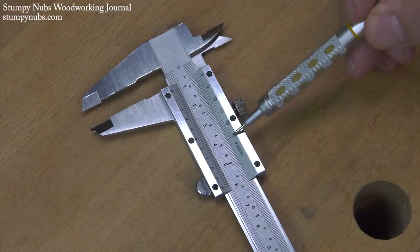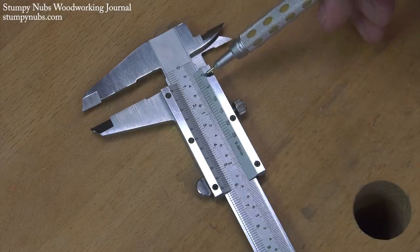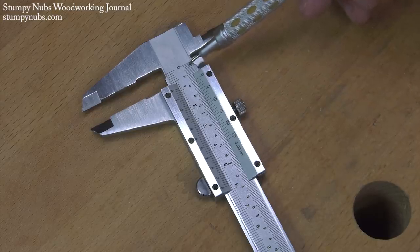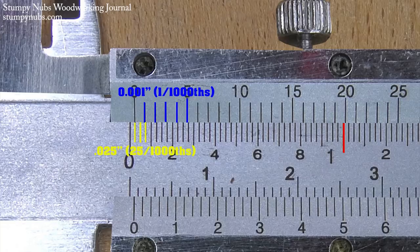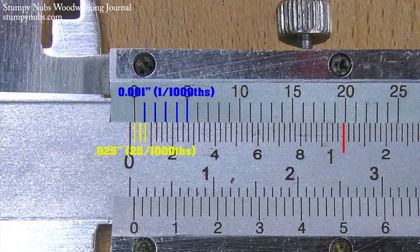It's as if the twenty-five marks on that upper scale were squeezed between the smallest marks on your lower scale. Remember, those small marks on that lower main scale represent twenty-five thousandths of an inch. The marks on the Vernier scale are those thousandths of an inch, all twenty-five of them.